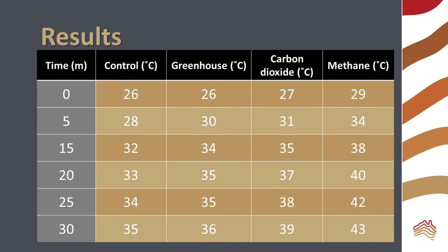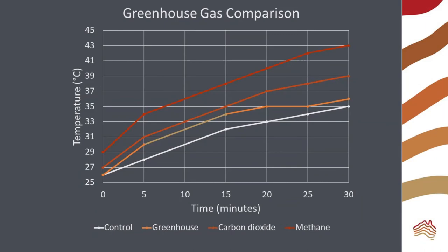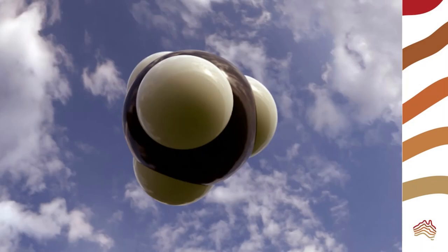You can see I've collated all my data into a table here and then I've presented it in a graph. You can see here that methane is significantly hotter than all other jars and carbon dioxide too. This demonstrates that methane has a higher warming potential than carbon dioxide.